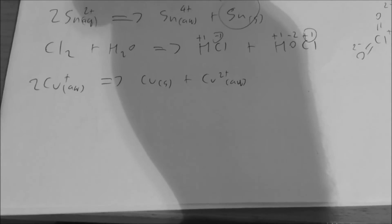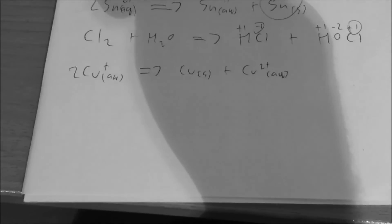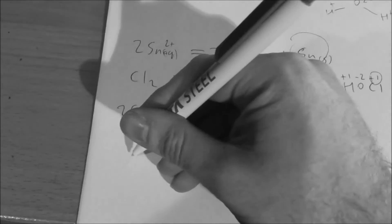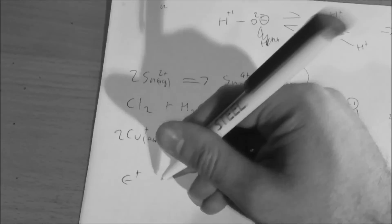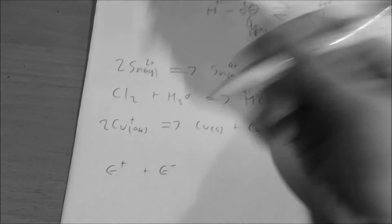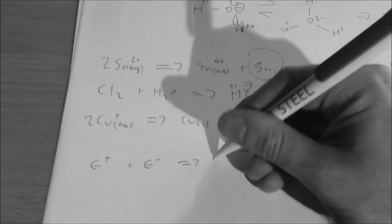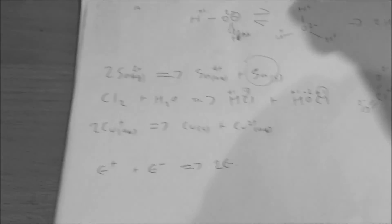Comproportionation is generally less common, but the same principles apply. So generally, if we have E plus and E minus, then they'll react together to give 2E, or whatever the compound is. That's the general principle behind that.